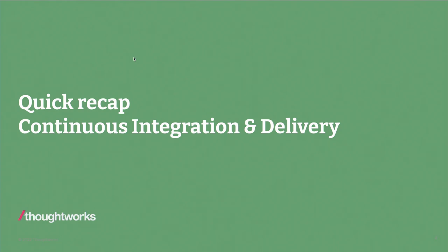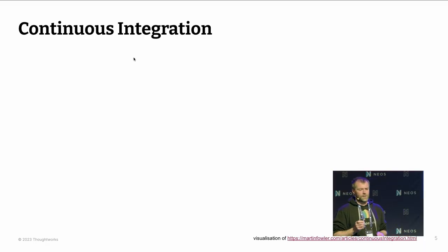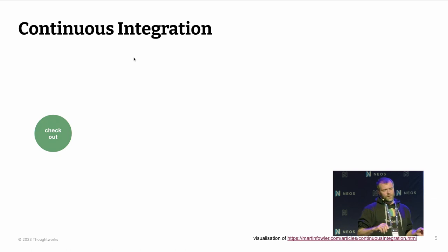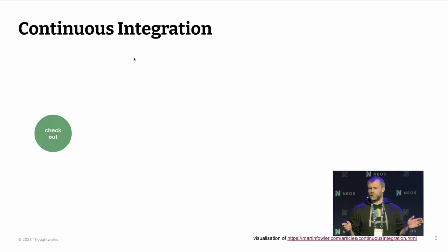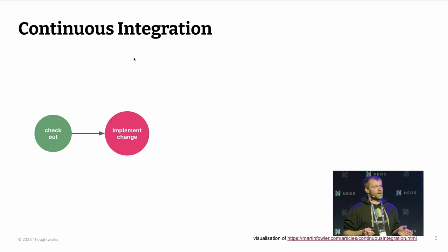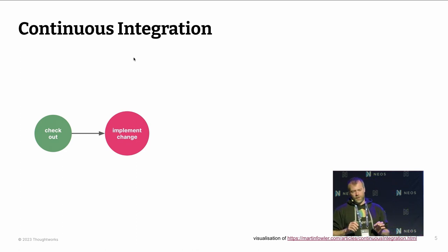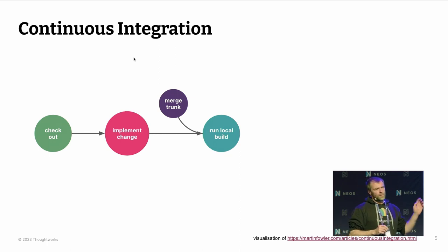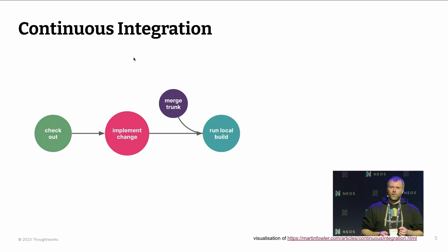Who of you is doing continuous integration for whatever things? Let's quickly recap what this is about. A continuous integration development process usually starts with a developer checking out the latest code base — something like git pull. Once you have the latest revision on your machine, you implement a change: a new feature, a bug fix, whatever. Ideally for CI, this happens in very small batches. Then you get the last update from remote, merge it back in, and run a local build to get first feedback whether your change works as expected.